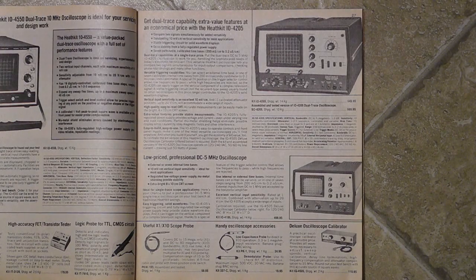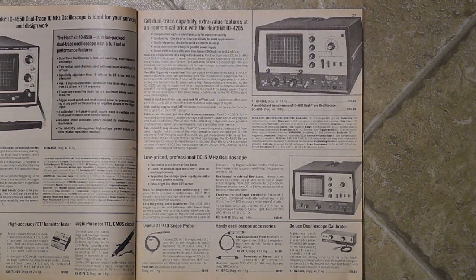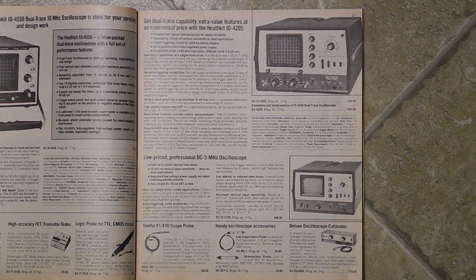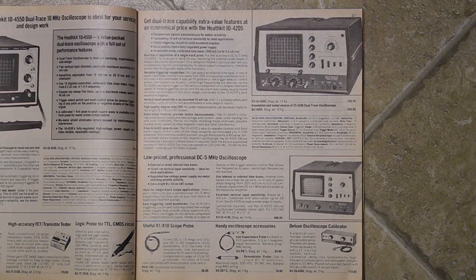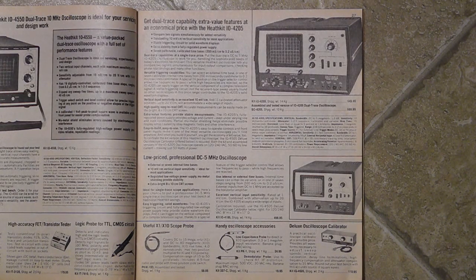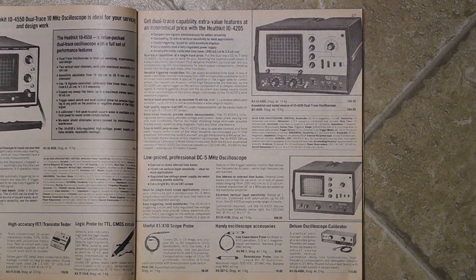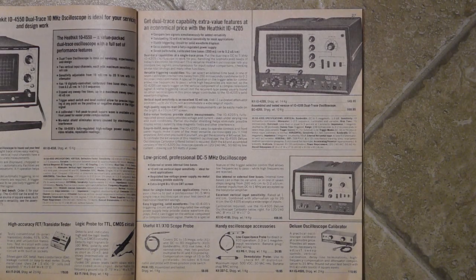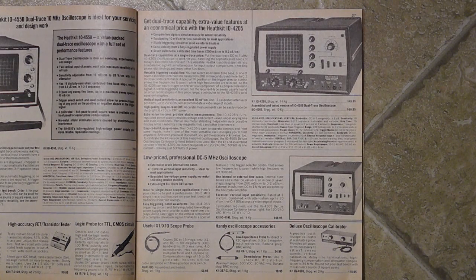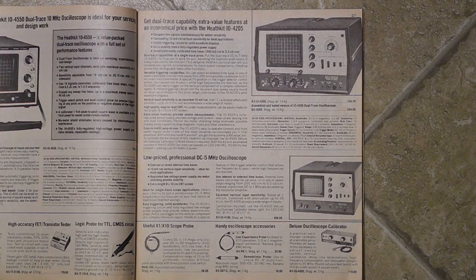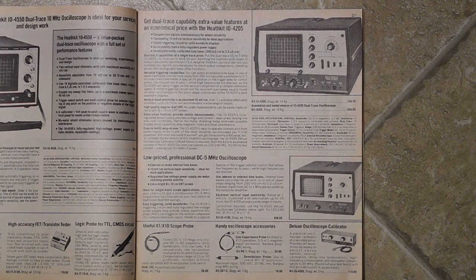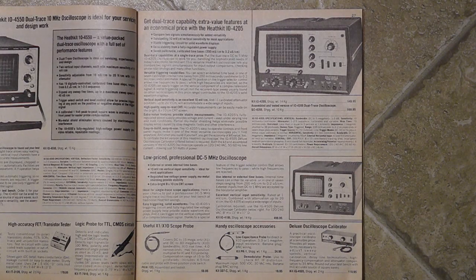It was a mid-range scope. The IO4105 was a lower priced unit that was essentially the same but with a single trace for about $150 less. My 1982 catalog also lists the 35 MHz IO4205-35 scope for $1,799.95 as a kit, representing their high-end model. In addition to the scope you would need one or two probes that sold for $59.95 each, and if building it as a kit you typically needed to purchase the oscilloscope calibrator kit at $119.95.